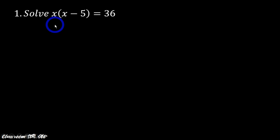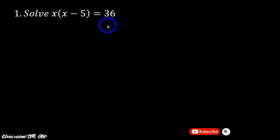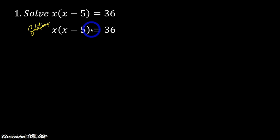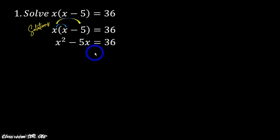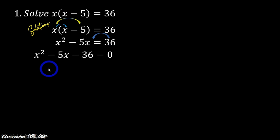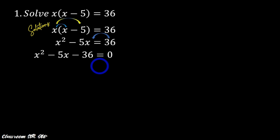So we are asked to solve x(x minus 5) is equal to 36. Now this is an equation that is actually not written in the standard form of the quadratic equation. What we are going to do first is simplify this expression by multiplying x by x and x by negative 5. So we have x squared minus 5x is equal to 36. Now since this is not yet equated to zero, we transpose 36 so that we have x squared minus 5x minus 36 equals zero. Now since our equation is already written in the standard form of the quadratic equation, we are now ready to solve it.